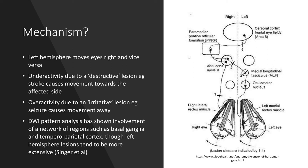One study performed a DWI pattern analysis to localise where in the brain lesions producing eye deviation might be. There wasn't one particular area — multiple networks were involved, including the basal ganglia and temporal parietal cortex. Notably, a smaller lesion in the right hemisphere could produce eye deviation, but eye deviation from a left hemisphere stroke suggests a more severe stroke with a more extensive infarct.